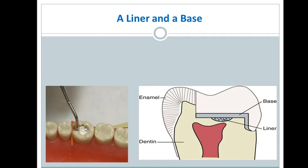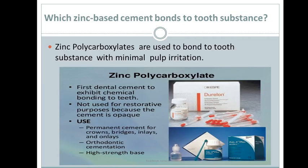Which zinc-based cement bonds to tooth substance? Zinc polycarboxylate is a well-known cement used to bond to tooth substance. We choose it because it has minimal pulp irritation — it's very good for pulp protection. It is used as a permanent cement for crowns, bridges, inlays, onlays, orthodontic cementation, and as a high-strength base, because it has no bad effect on the pulp.